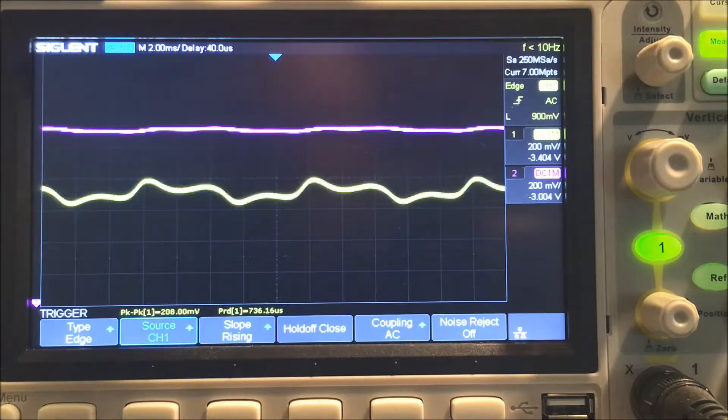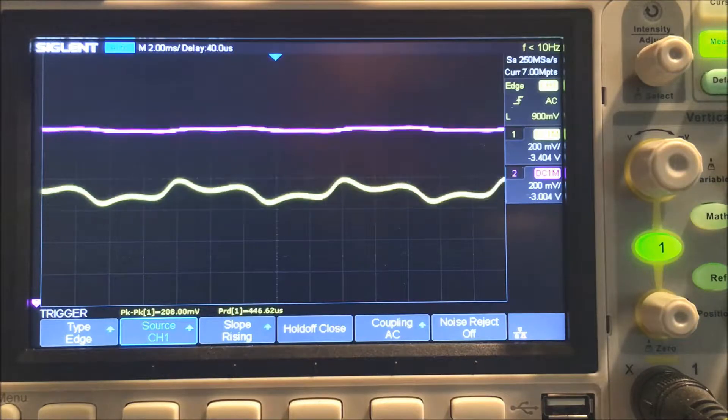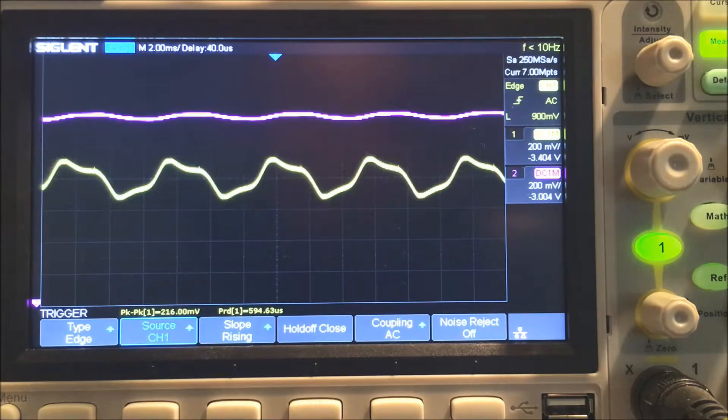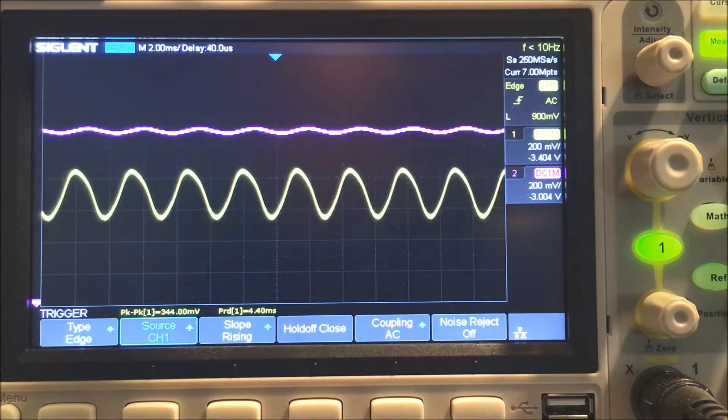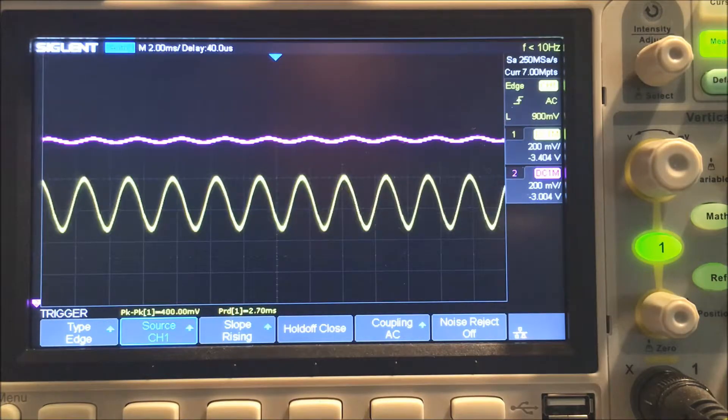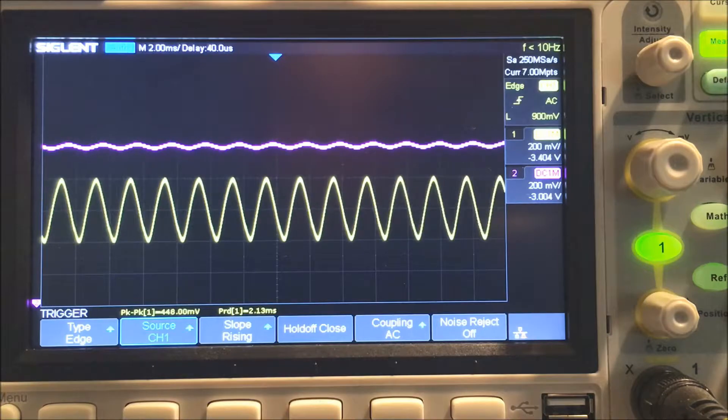The top trace is the output of the filter and the bottom trace is the input. We're at 100 hertz, that's 200, 300, 400, 500.